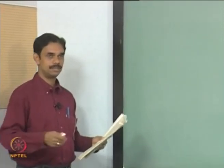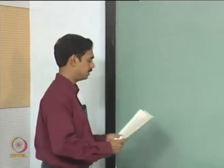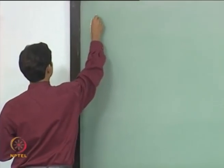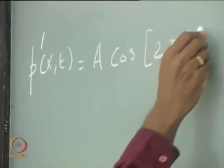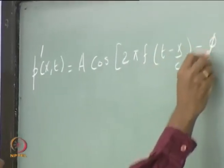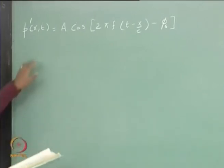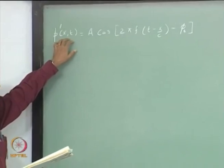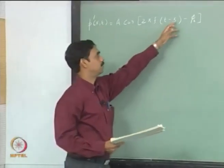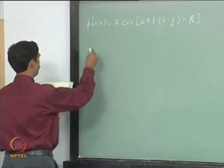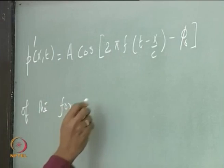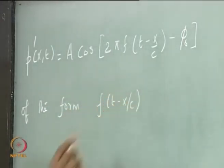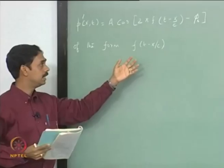For studying harmonic waves we use sines and cosines — one is a phase-shifted version of the other. A typical expression for plane propagation of harmonic waves: plane because we are talking about one-dimensional waves where x is the only spatial dimension. This expression is of the form f of t minus x over c, which is the right-running wave solution we saw previously.